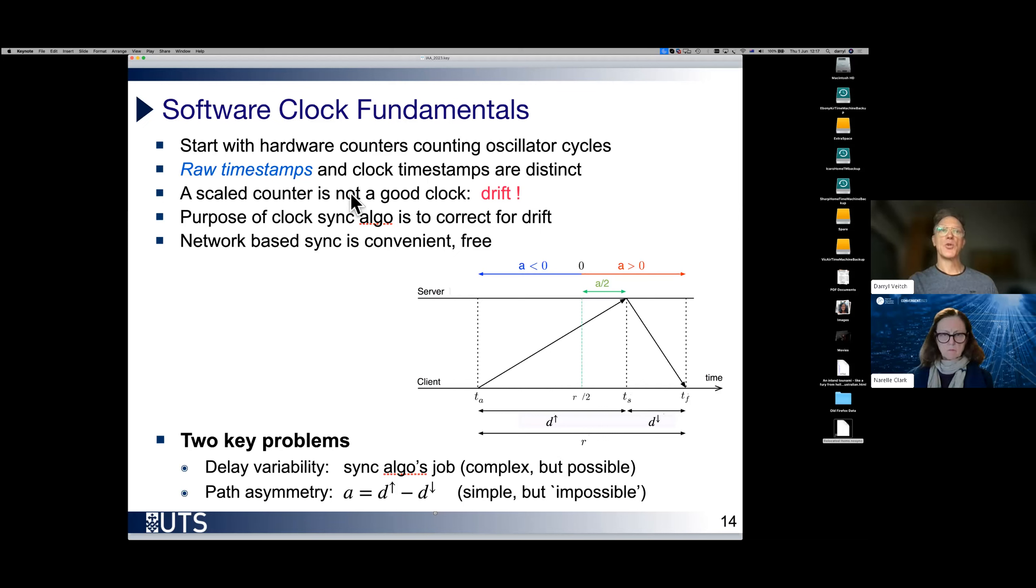Underneath all that are the raw timestamps. Now one could take a counter and simply scale it so that it reads in seconds rather than tick units. But that is not a good clock when it drifts. The purpose of the clock synchronization algorithm is to correct for that drift.